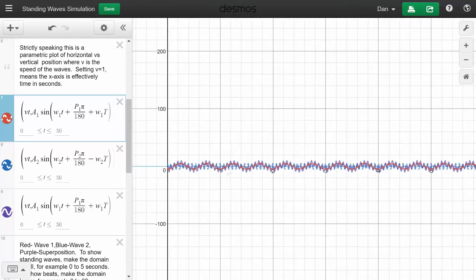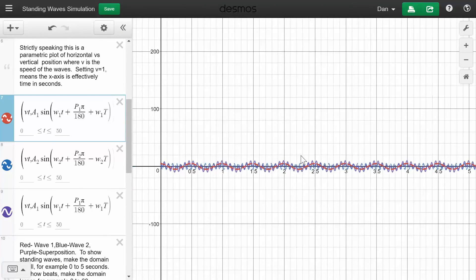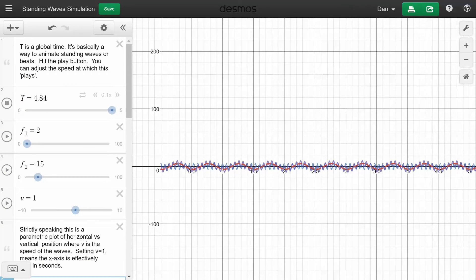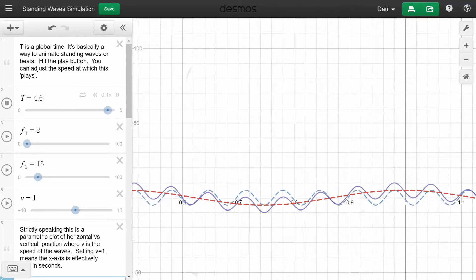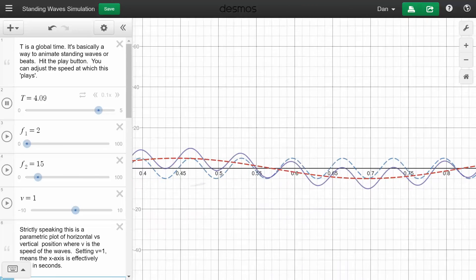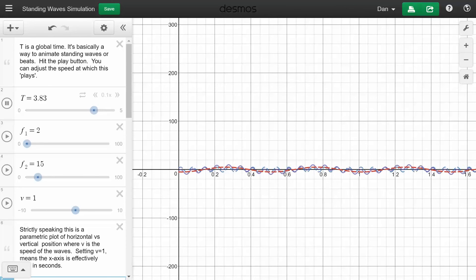Now we can zoom way in here. So I made the frequencies a little bit more different. I made them 2 and 15 Hz. But if you zoom in, you can see what's going on. You can sort of see the wave packets and the individual waves.